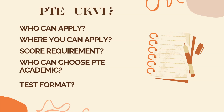The reading section has five modules: reading and writing fill in the blanks, MCQ multiple answers, reorder paragraphs, reading fill in the blanks, and MCQ single answer. In the listening section, the same modules: summarize spoken text, MCQ multiple answers, listening fill in the blanks, highlight correct summary, MCQ single answer, select missing word, and write from dictation. There is no difference in the number of questions and the time duration.